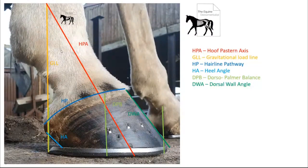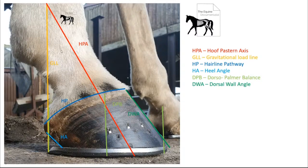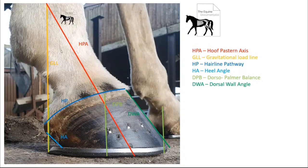After looking at the whole horse, when we look at the digit we have some established ideals to look for. It's really important to recognize the ideal because deviations will affect posture. We're going to look at the hoof pastern axis, the gravitational load line dropped through the center of mass of the limb, the hairline pathway, the heel angle, dorsal-palmar balance, and the dorsal wall angle compared to the heel angle. A straight hoof pastern axis is directly affected by the ratio between the height of the heel and toe and their angles.